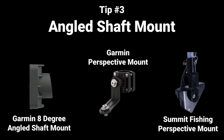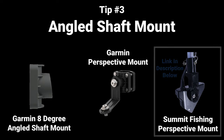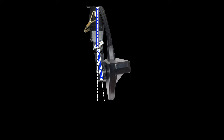The third thing you can try is using an angled shaft mount. Some of you may have gotten the 8-degree one that came with your unit, or you can buy one. I use the Summit one — it's intended for perspective mode, but I use it at a slight angle and it works really well. That way the sonar reflections aren't bouncing directly back up at the unit itself; they'll reflect off to the side, which in many situations can actually eliminate the ghost tree issue.